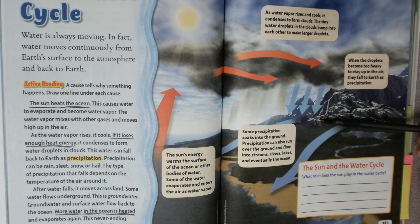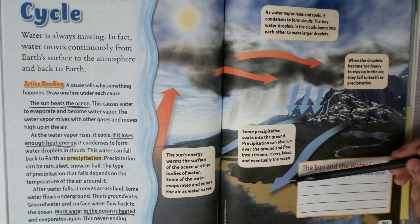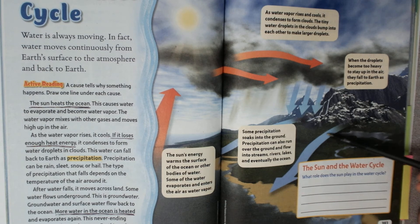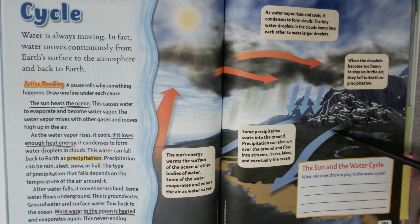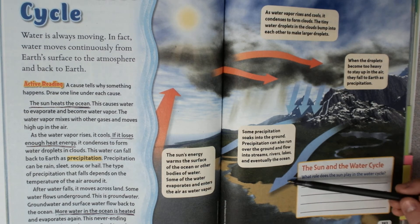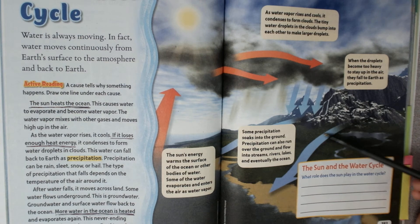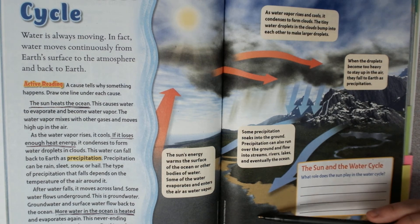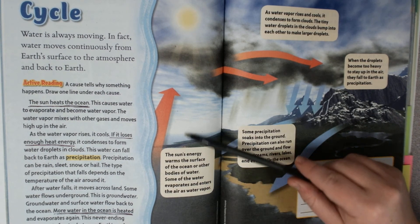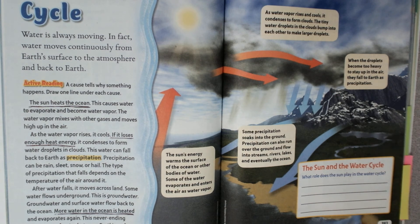And some precipitation soaks into the ground. Precipitation can also run over the ground and flow into streams, lakes, rivers, and eventually back into the ocean, where it starts all over again.